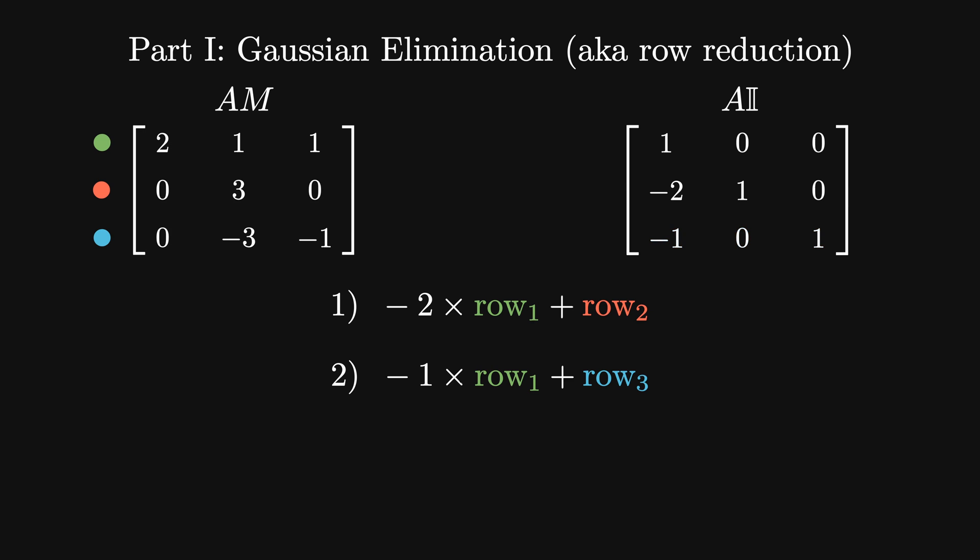In general, I multiply the first row by minus the first entry of the nth row, so a(n,1) divided by the first entry of the first row a(1,1), and add that to the nth row.